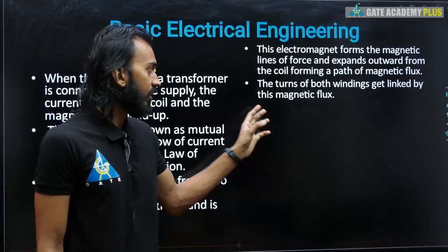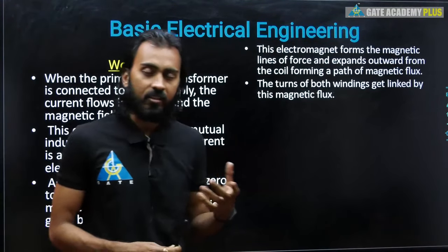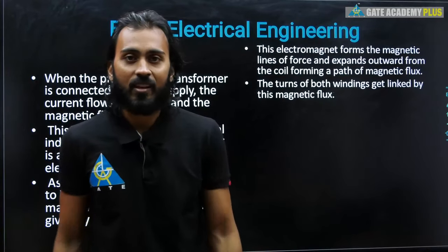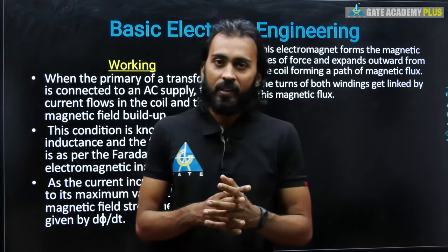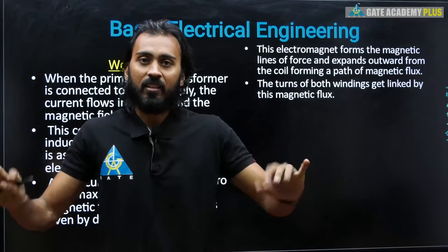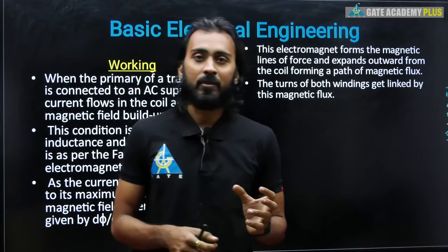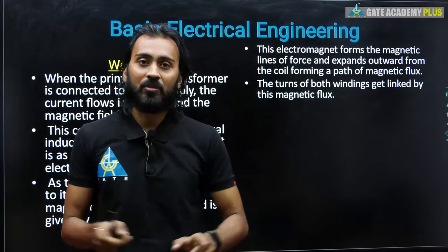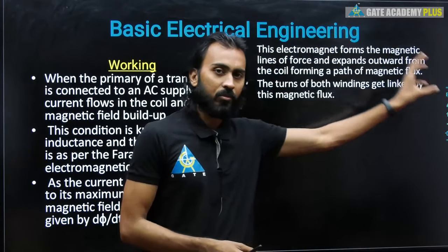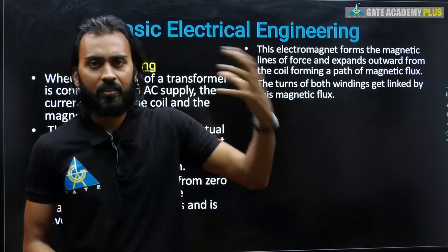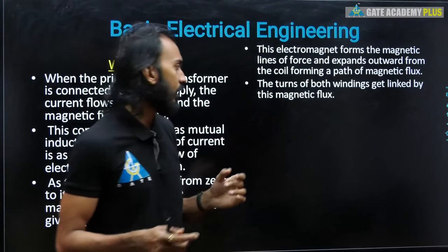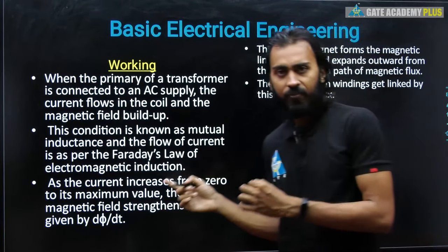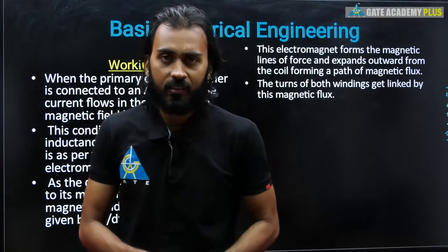The turns of both windings get linked by this magnetic flux. As I mentioned in the construction part: there is no electrical connection between the primary and secondary windings — electrically they are apart. They are connected only in magnetic form. That is why the transformer is also termed as an electromagnetic device — electrical input, magnetically transferred circuit, and electrical output on the other side.